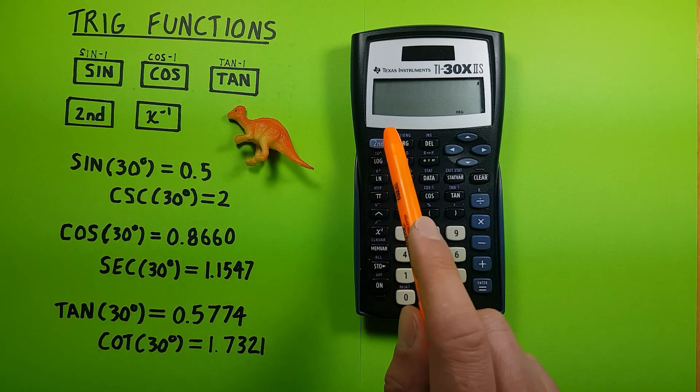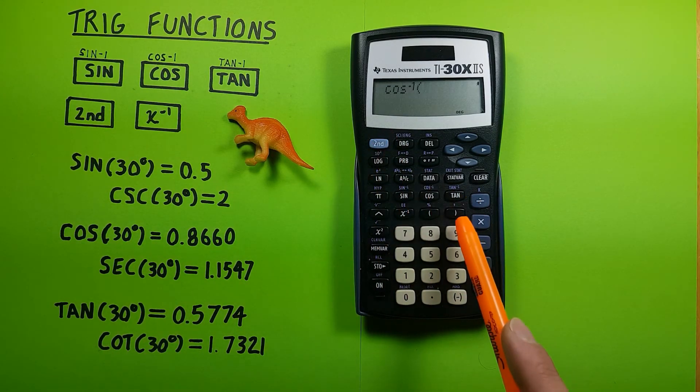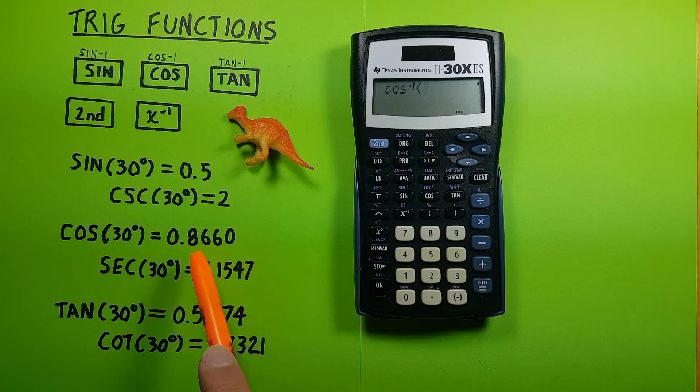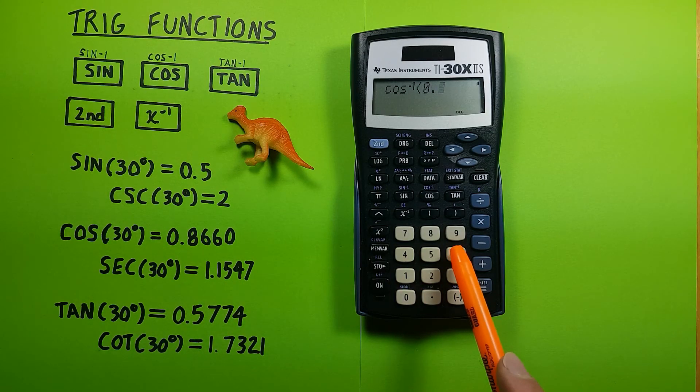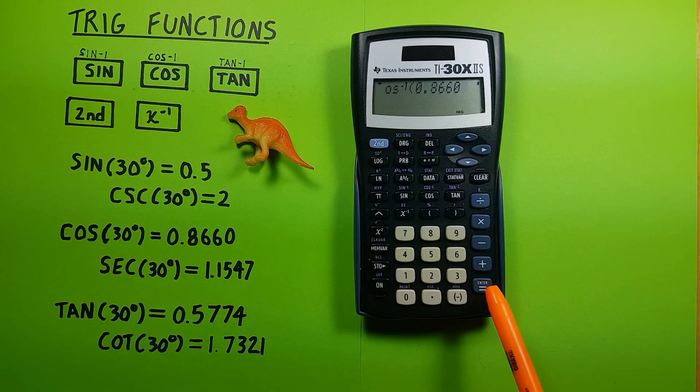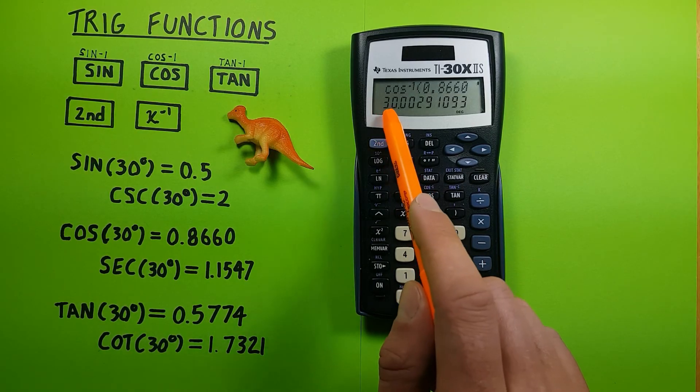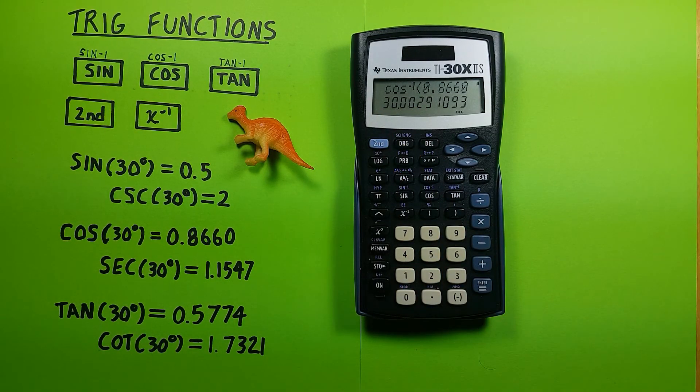For arc cosine, second function cosine, and remember for this one we got 0.8660 equals, and we see this brings us back to what would round to 30 degrees.